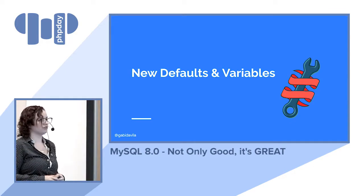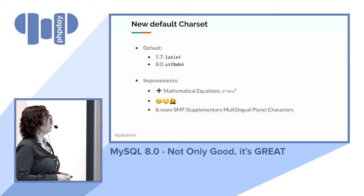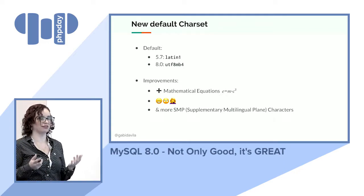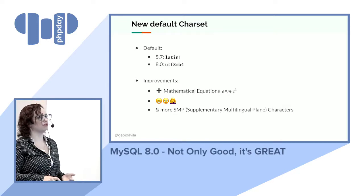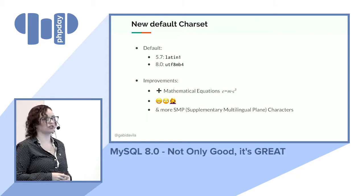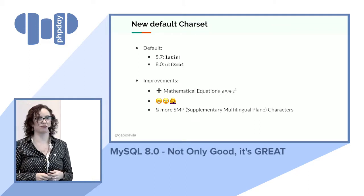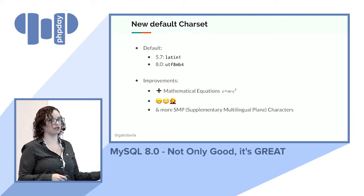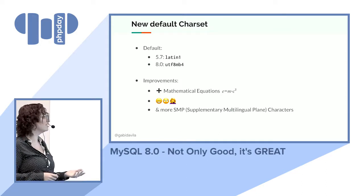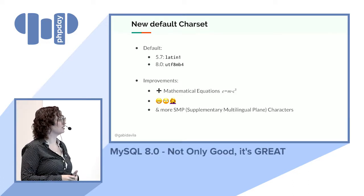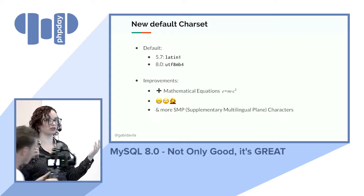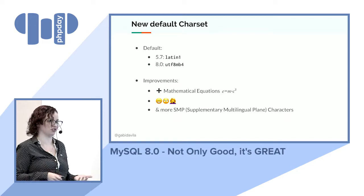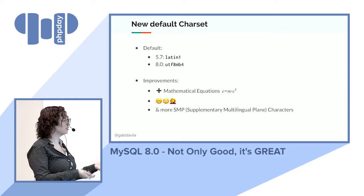There are also new defaults and variables. Character set — how you store information — and collation — how you compare it — have both changed. In 5.7 the default was Latin1, but in version 8 the new default is utf8mb4. The 'mb4' stands for multibyte string 4, which allows you to store mathematical equations, new emoji, and characters from supplemental multilingual planes, such as ancient scripts. This is simply better support for languages beyond English.